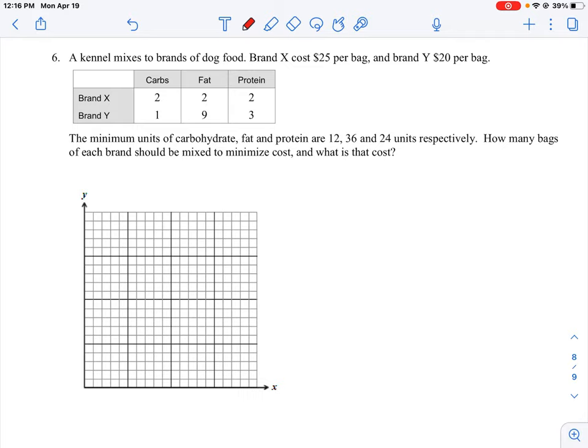So the first statement here says that a kennel mixes brands of dog food and Brand X costs $25 per bag. So that's one item we know for cost, and Brand Y costs $20 per bag. So what we can get out of that is our cost equation. The cost to buy food for the dog food is going to be 25X, which is 25 times the number of units of Brand X, plus 20 times Y, which is the number of units of Brand Y.